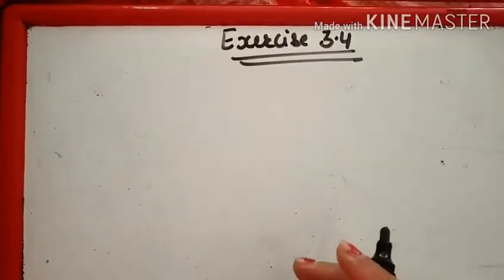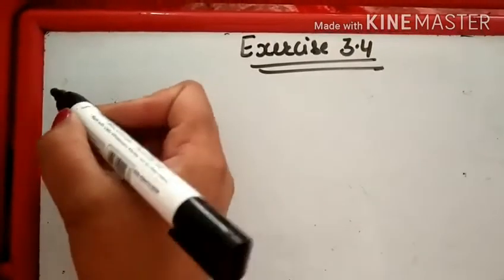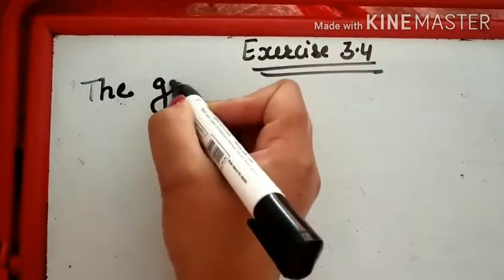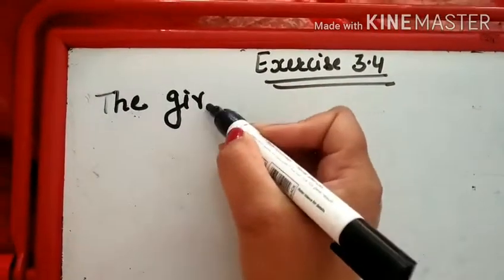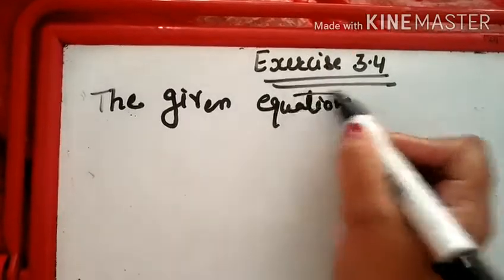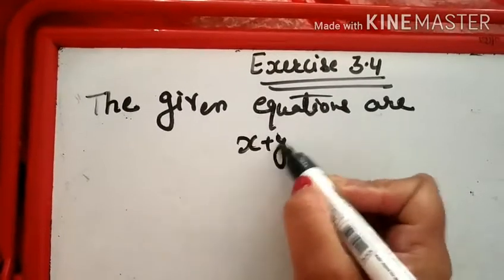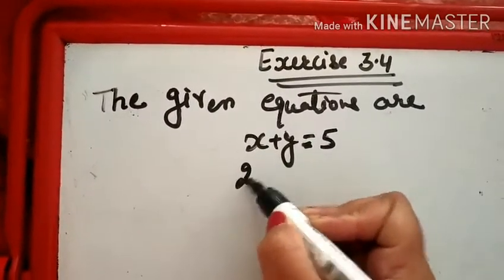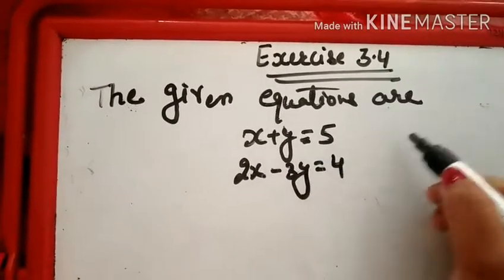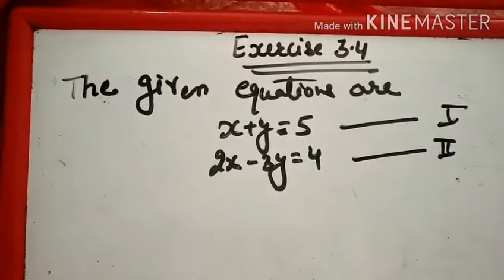Now, come to Exercise 3.4. अब हम इसकी First Example लेंगे। The given equations are: X + Y = 5 — इसको हम First Equation नाम दे देंगे — and 2X − 3Y = 4 — इसको हम Second Equation नाम दे देंगे।